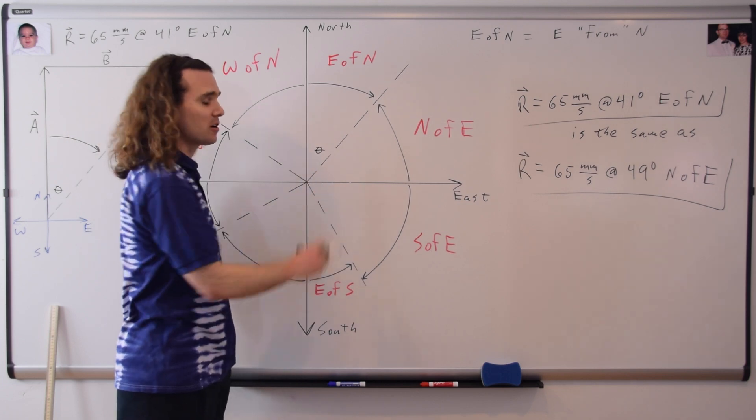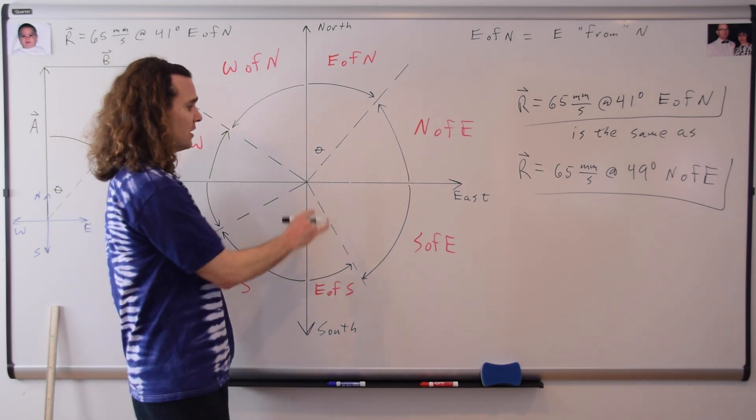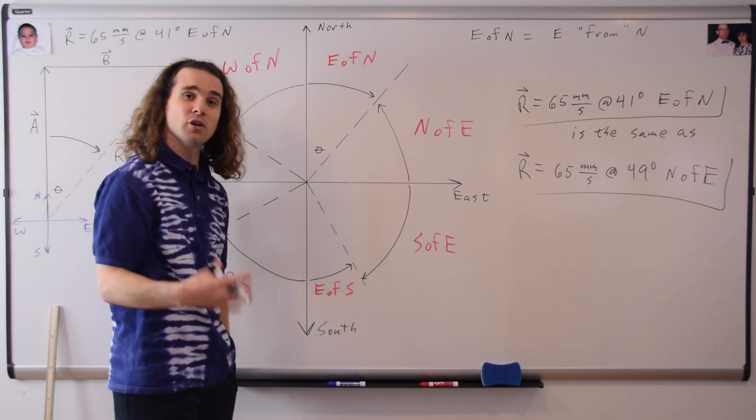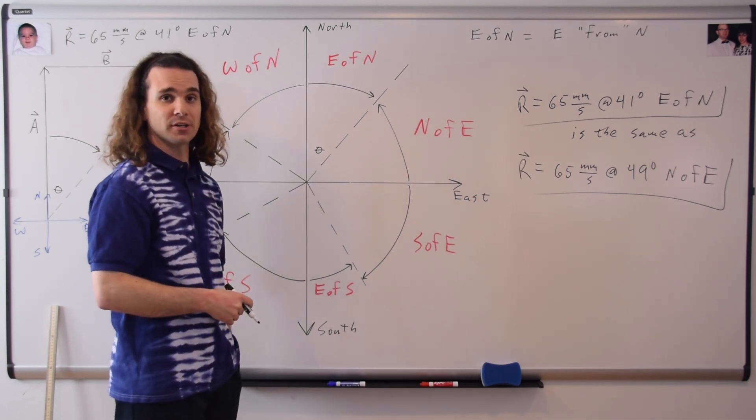Well, 41 and 49 degrees are complementary angles. What do you mean, complementary angles? They add up to 90 degrees. Oh, yeah. Correct. North and east are 90 degrees relative to one another. Therefore, these two angles are going to be complementary to one another. Therefore, this angle right here is going to be 90 minus 41 degrees.